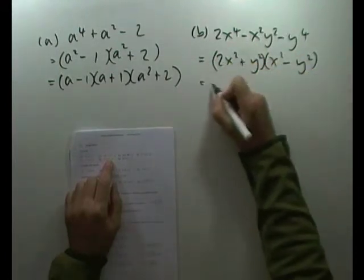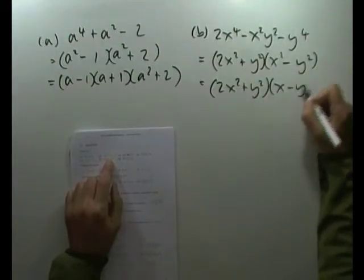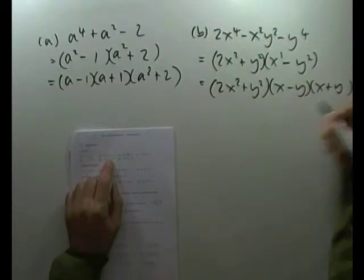And the negative will go to the bigger product. So it becomes that. And once again, I've got 2x squared plus y squared and a difference of two squares. x minus y, x plus y.